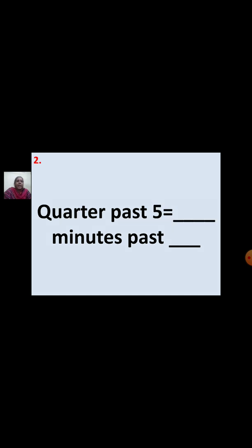Second question: Quarter past 5 equal to dash minutes past dash. As I told you, quarter means 15 minutes. The hour shown is 5, so your answer is 15 minutes past 5. After 5 o'clock, 15 minutes are past. Either you can say quarter past 5 or 15 minutes past 5.